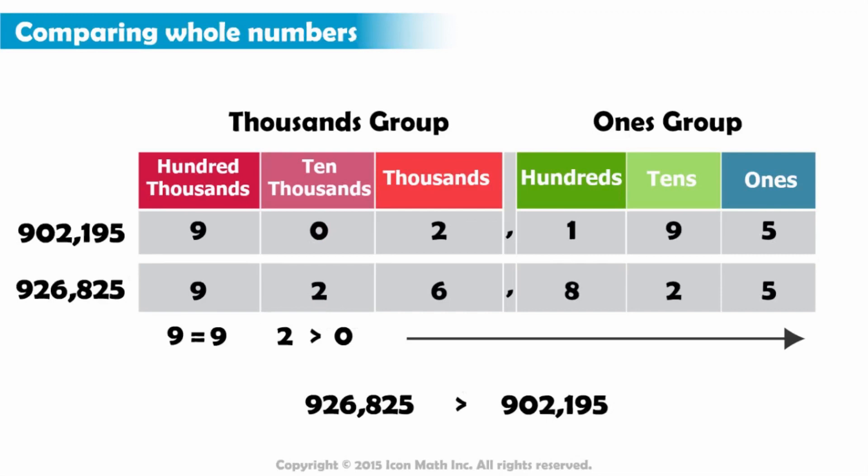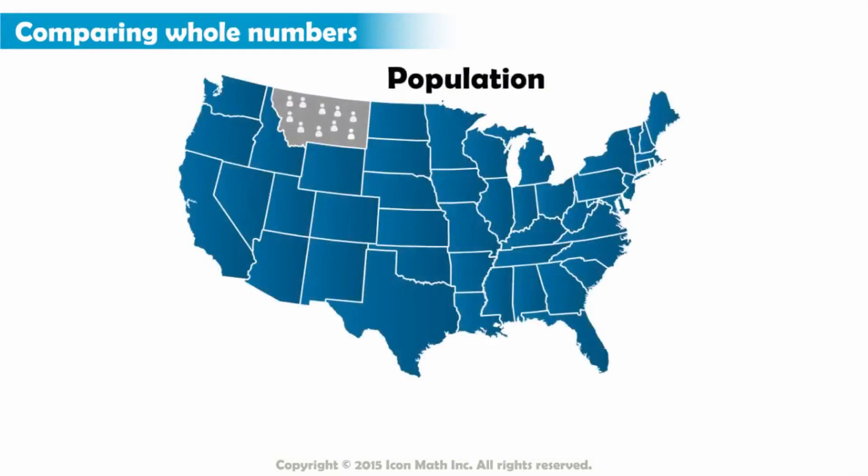Once we find a difference, as we just did, we do not need to compare the remaining digits to the right, which means the population in year 2004 was greater than the population in the year 2000. And we write this conclusion using the greater than sign.